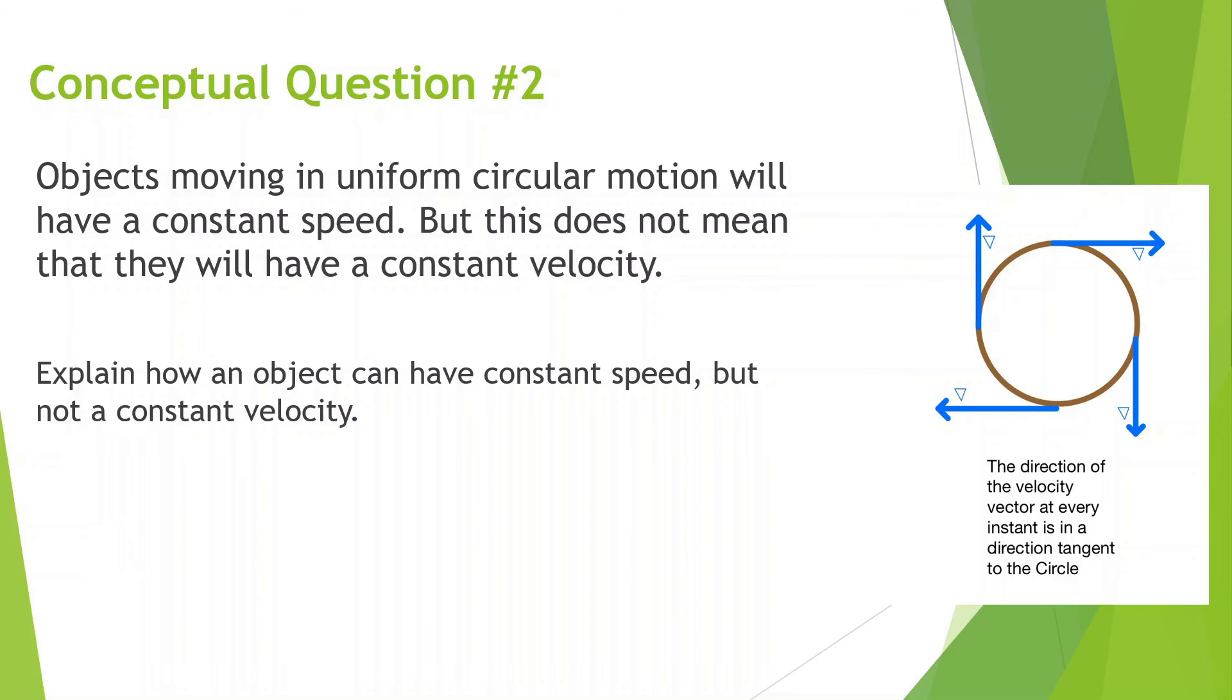However, if something is moving in a circle, it may have a constant speed as it moves in a circle, but it's always going to have a different direction. It's not moving in a straight line. And remember, velocity includes direction. So if the direction is constantly changing, that means the velocity is changing, even though it has the same speed.